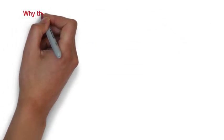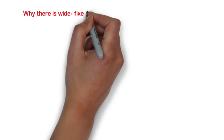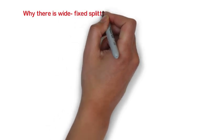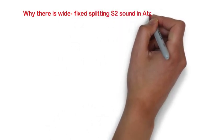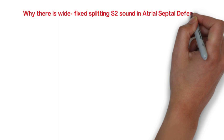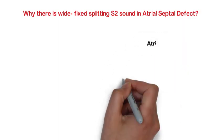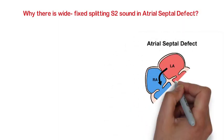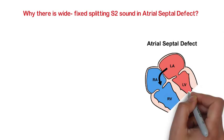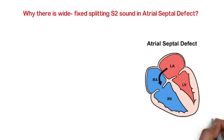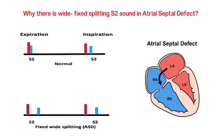There is fixed wide splitting in ASD because during inspiration, the diaphragm is pulled downwards, creating negative intrathoracic pressure, which leads to an increase in venous return to the right side of the heart mainly. Since pulmonary resistance decreases during inspiration, the lungs hold more blood for gaseous exchange, thus giving less blood to the left atrium. Hence, less blood passes through the atrial septal defect.